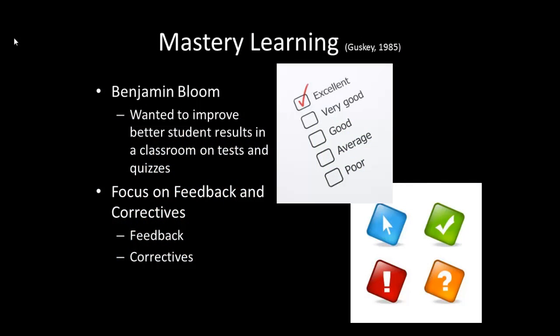Let's start by talking about Benjamin Bloom. Bloom of Bloom's Taxonomy really wanted to improve student results on tests and quizzes. He noticed that tests were not being used properly. Bloom felt tests should be used primarily as a source of feedback and correctives — not as a summative assessment — but used throughout a week or two to make sure students are succeeding on every single assignment. If they aren't, students should receive feedback and correctives to help them succeed.